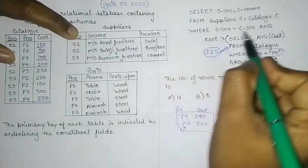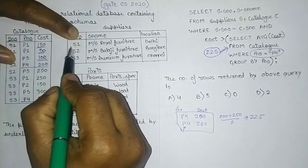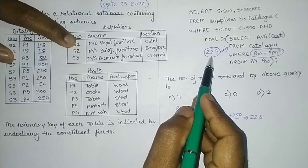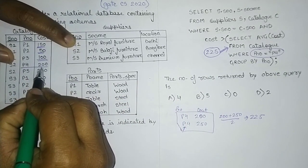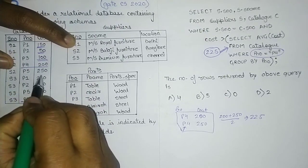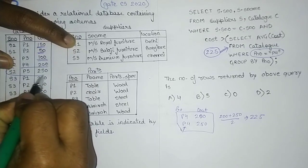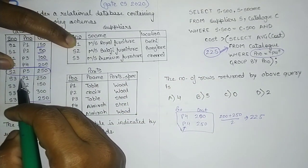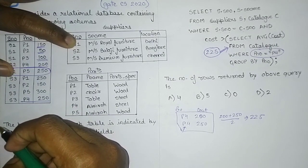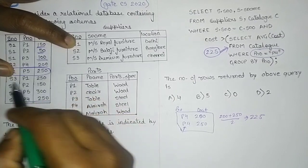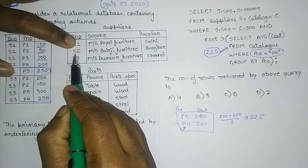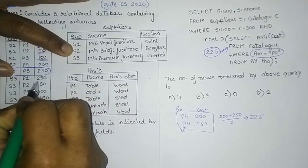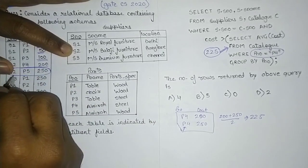Moving to S2: S2 in catalog does not match S1 in supplier, so we go to the next supplier row. S2 equals S2, but the cost is not greater than 225 — excluded. For the next catalog row with S2, the cost is greater than 225, so this row is included — that is the first result row. Moving to S3: S3 matches S3 in supplier and the cost is 250, which is greater than 225 — included. That is the second result row.